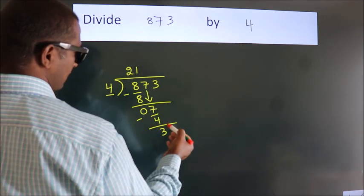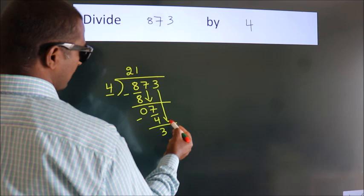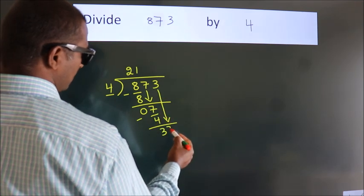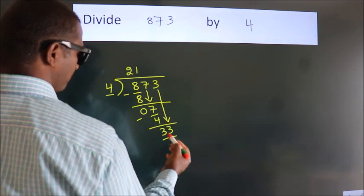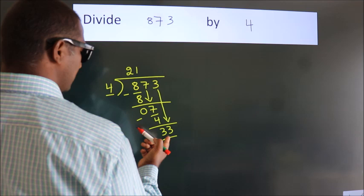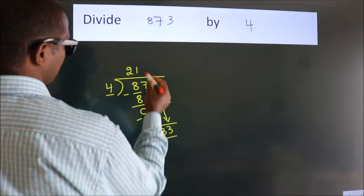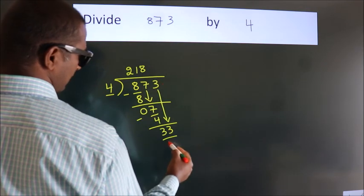After this, bring down the beside number. So, 3 down. So, 33. A number close to 33 in 4 table is 4 8s, 32.